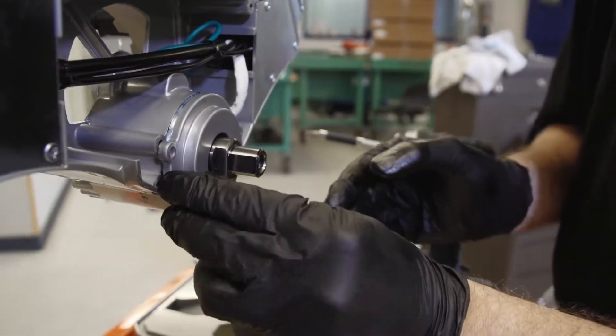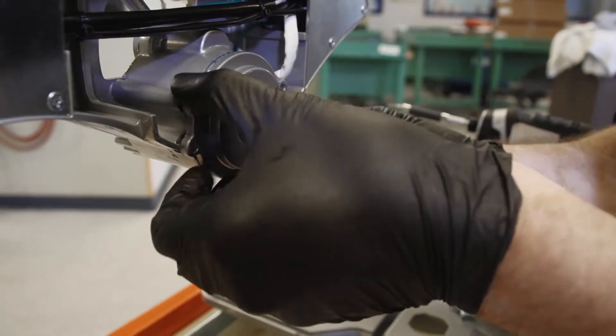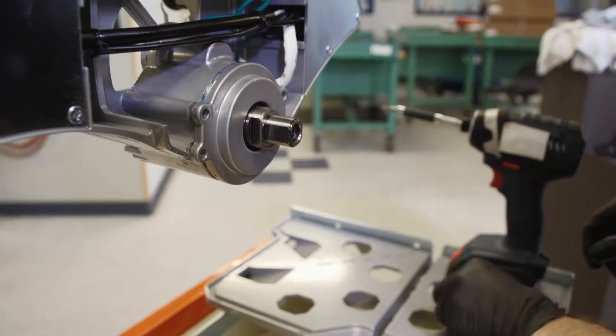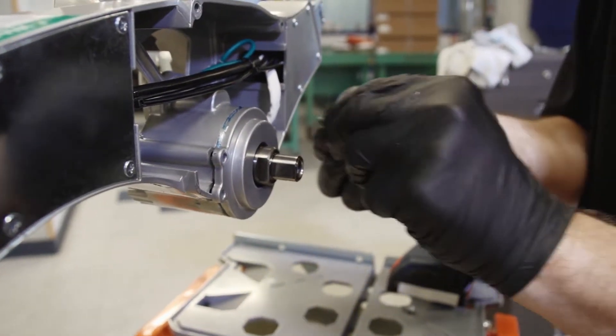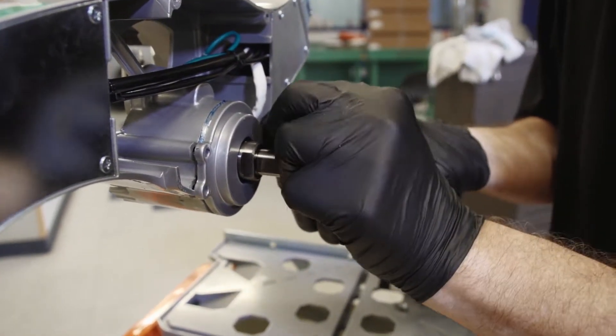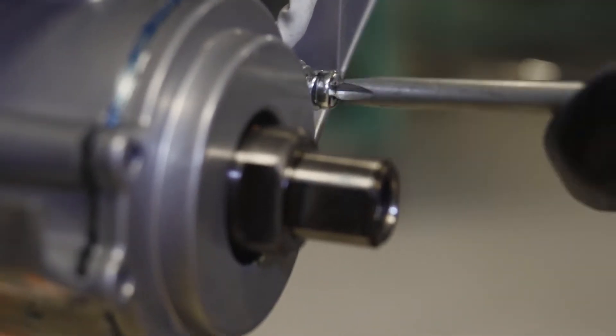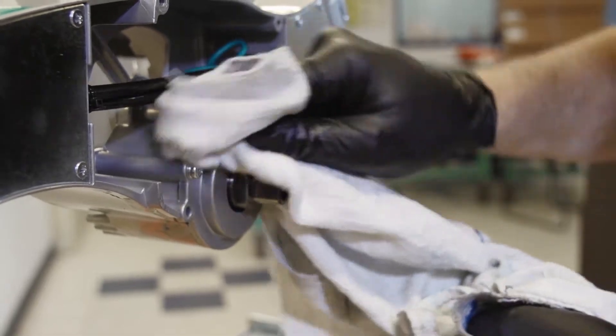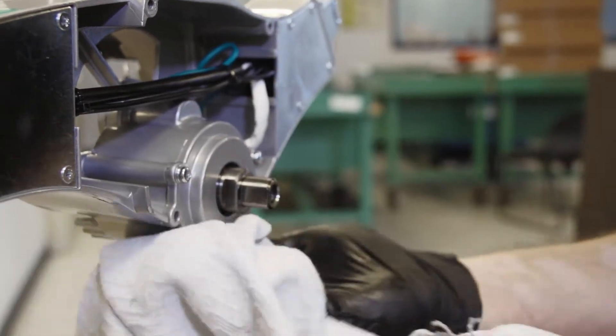Align the flanges with the bosses in the casting. Attach the two screws. Wipe off any grease that may have squeezed out or dripped out during the assembly process.